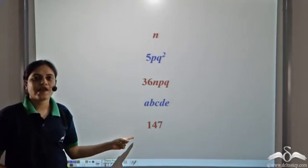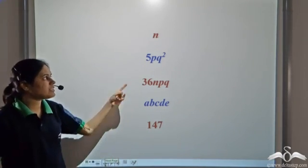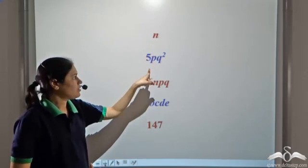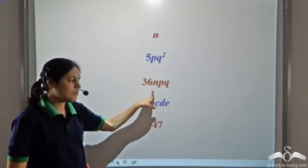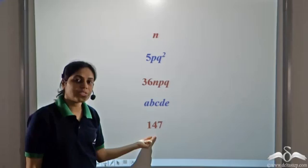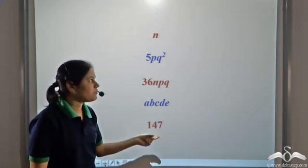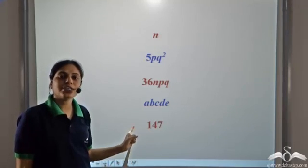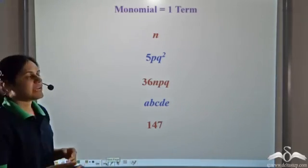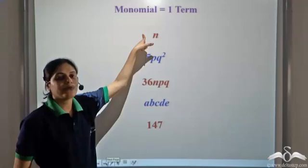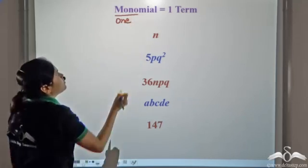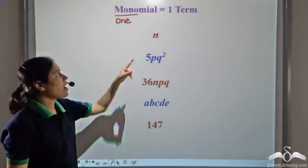Now look at all of these algebraic expressions. How many terms do they have? We just have one term because we are not adding anything. Here also we have one term, one term, one term, one term. This is a constant but it is also considered to be an expression with one term. Such algebraic expressions with one term are called monomials, where mono stands for one.